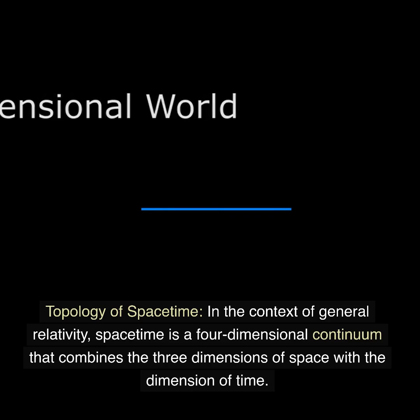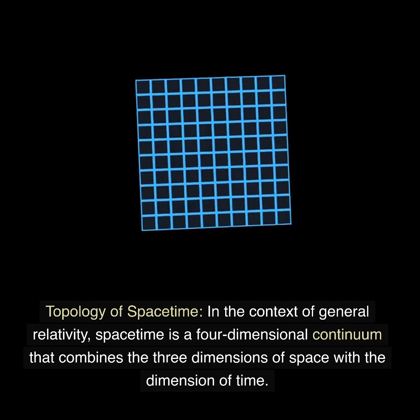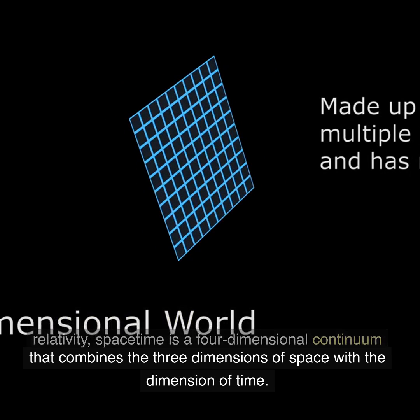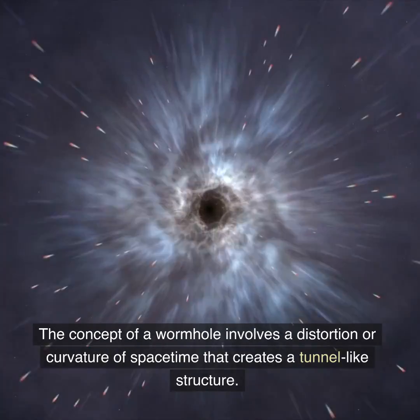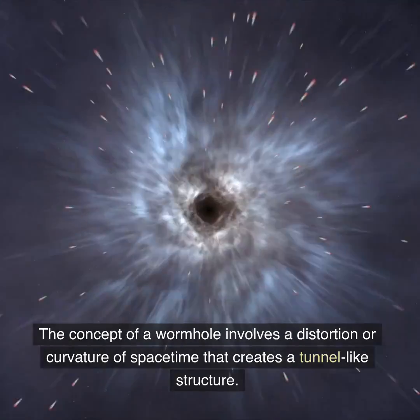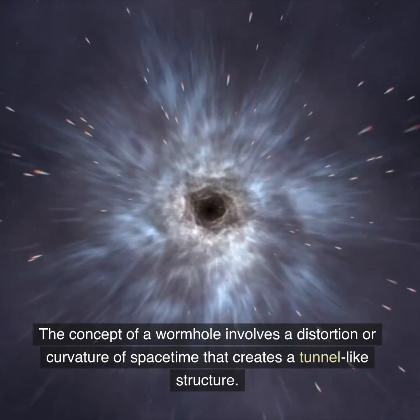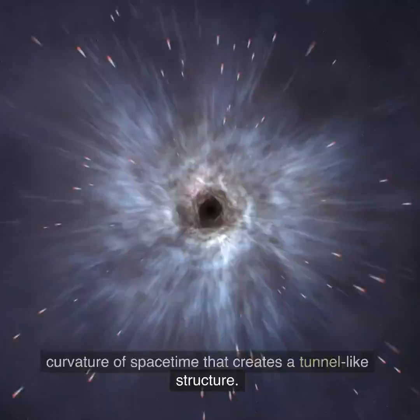Regarding the topology of spacetime: in the context of general relativity, spacetime is a four-dimensional continuum that combines the three dimensions of space with the dimension of time. The concept of a wormhole involves a distortion or curvature of spacetime that creates a tunnel-like structure.